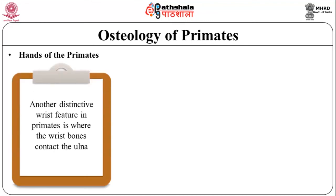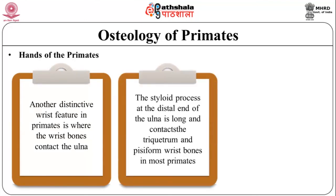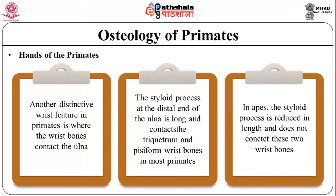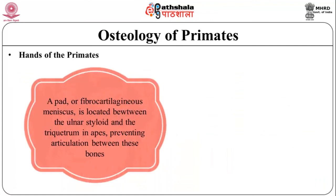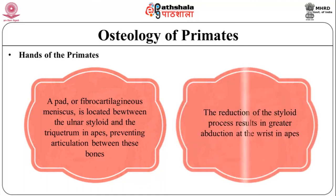Another distinctive wrist feature in primates is where the wrist bones contact the ulna. The styloid process at the distal end of the ulna is long and contacts the triquetrum and the pisiform wrist bones in most primates. In apes, the styloid process is reduced in length and does not contact these two wrist bones. A pad, or fibrocartilaginous meniscus, is located between the ulnar styloid and the triquetrum in apes, preventing articulation between these bones. The reduction of the styloid process results in ulnar abduction at the wrist in the apes.